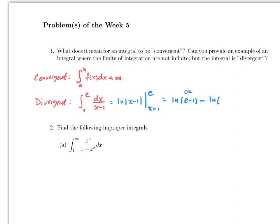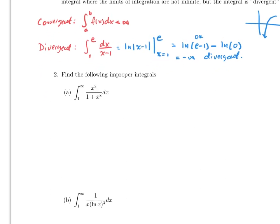But then we subtract ln(0). Recall from the graph of ln that as you approach zero from the right, ln goes to minus infinity. So the integral equals minus infinity, and therefore this integral is divergent.